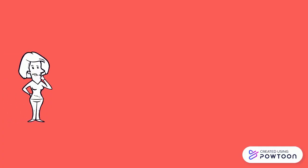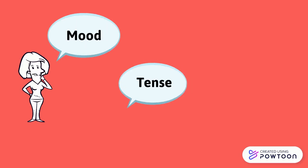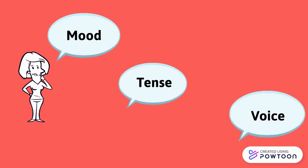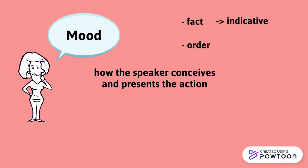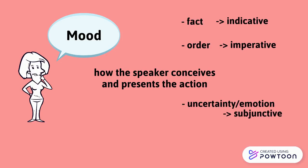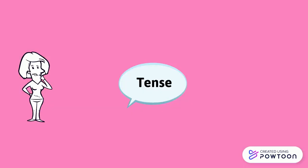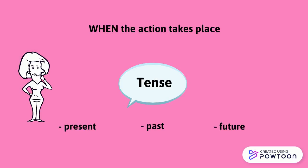Other factors influence the form of the verb, such as the mood, the tense, and the voice. The mood indicates how the speaker conceives and presents the action: as a fact, using the indicative; an order, using the imperative; with certainty or emotion, using the subjunctive; or depending on a condition, using the conditional. The tense indicates when the action takes place — in the present, in the past, or in the future — and the relations between different actions.